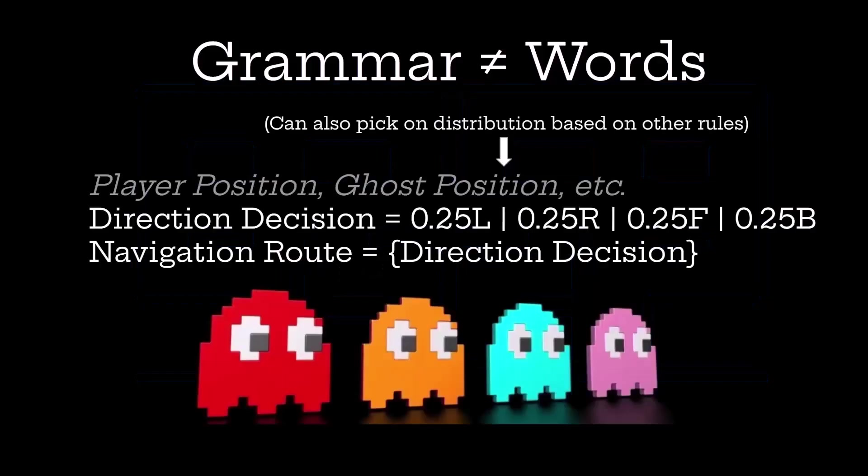Grammars don't have to be pure random, as we've already described. The other ghosts in Pac-Man take into account other things like the player's position and other ghosts' positions when making their direction decision. So the distribution would not be a flat 25/25/25/25 — it actually adjusts in real time based on those other weights.